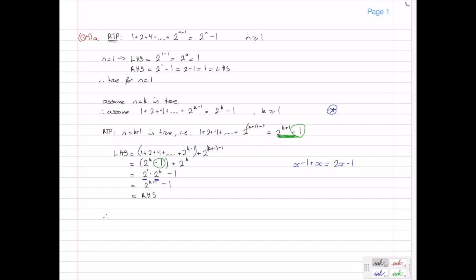And so therefore, n equals k plus 1 is true if our inductive hypothesis is true. If n equals k is true. Okay, and so therefore, this whole statement is true by mathematical induction. So we can write, therefore, 1 plus 2 plus 4 all the way up to 2 to the n minus 1 equals 2 to the n minus 1 is true by mathematical induction.